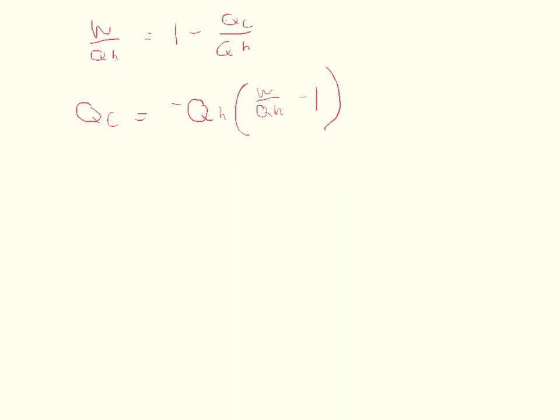So just again, we said that we could set work over QH, and that would equal 1 minus the QC over QH. And then we solved for QC, and we got that it's negative QH times the work over QH minus 1.